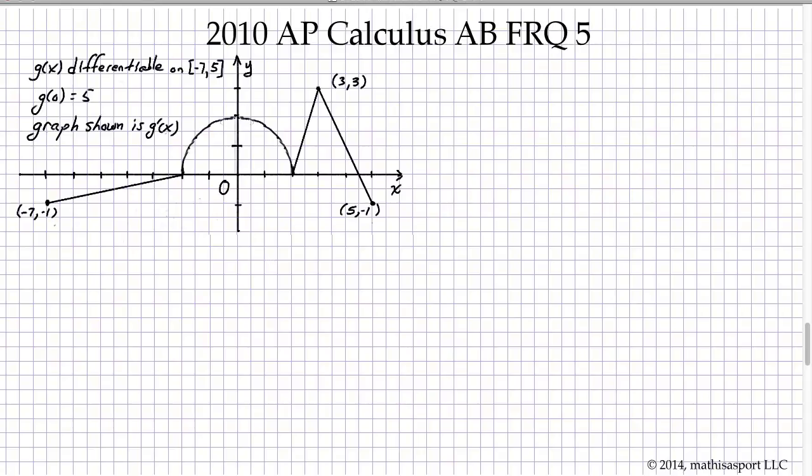We're going to be working principally with a function g. We know that it's differentiable on the closed interval negative 7 to 5. We know its value at a point, that g of 0 is 5. And then most importantly, we know that the graph shown is not g, but g prime of x.